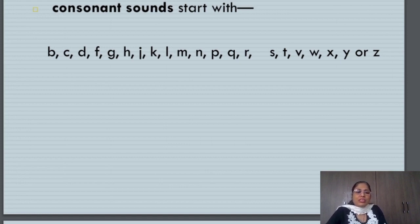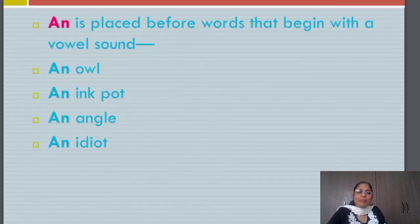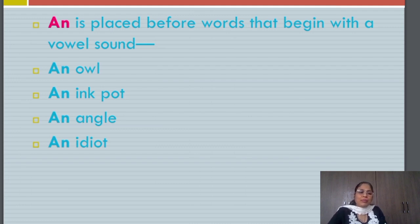All those words which start with a consonant-like sound take A in front of them. And the others, that is A, E, I, O, U sound words, take an in front of them. For example, an owl, an ink pot, an ankle, an idiot.